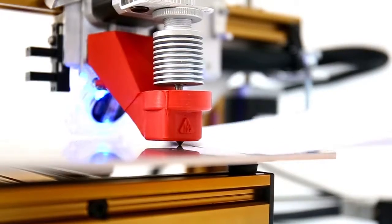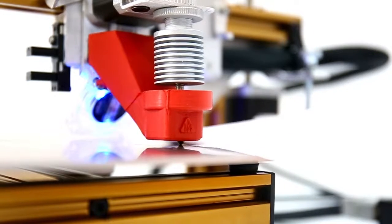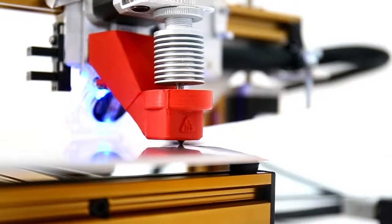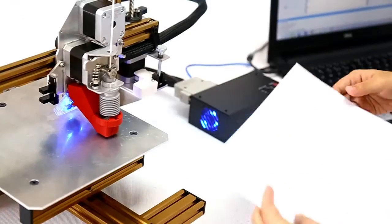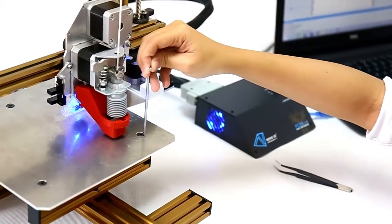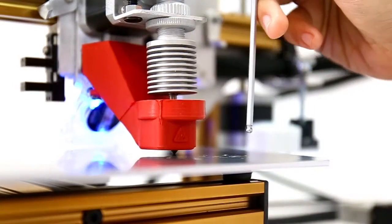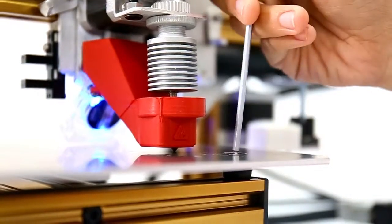If the distance is too close, then the paper will not be able to pass smoothly through the gap between the nozzle and the print plate. You must therefore rotate the plate screw clockwise with the Allen key to lower the plate.